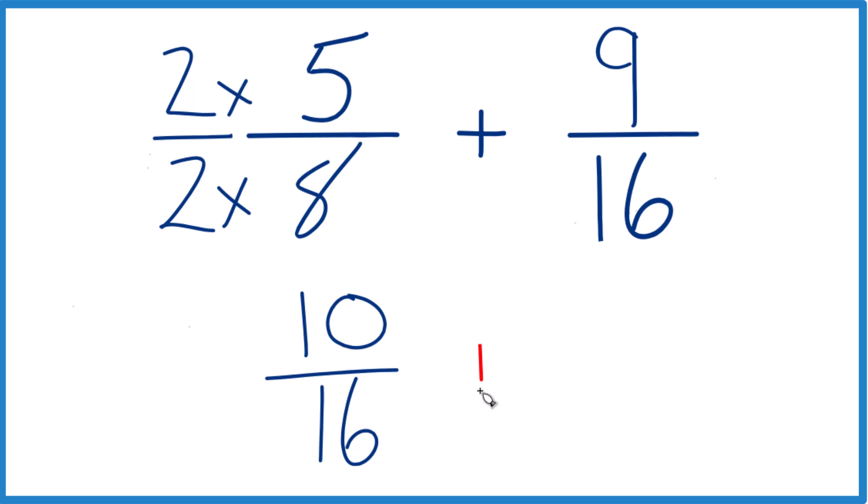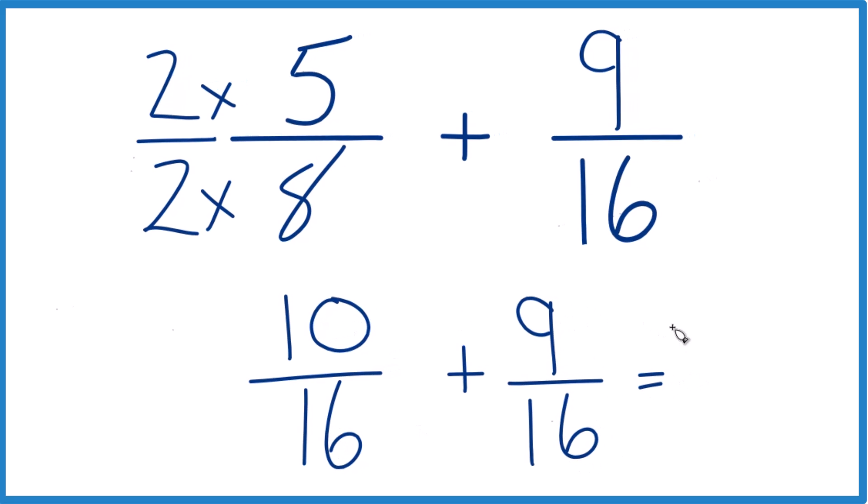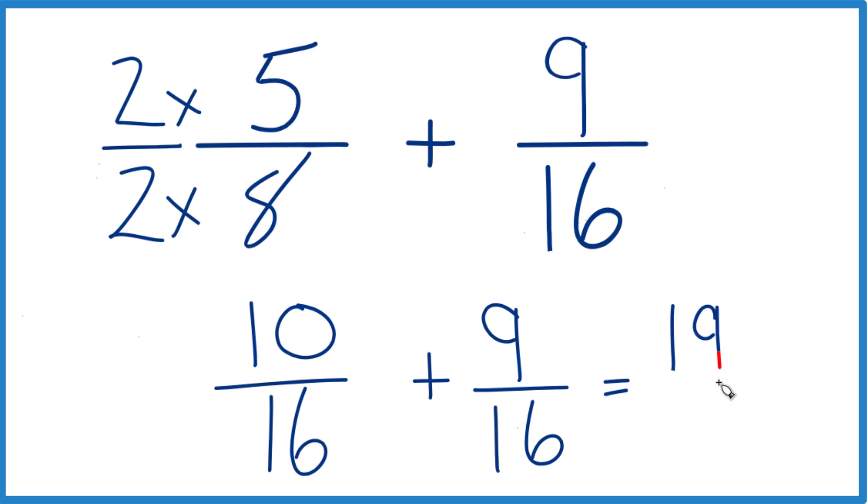But now we can add that to our 9 sixteenths here. And because we have the same denominator, we add the numerators. 10 plus 9 is 19. And then we have 16. We just bring that across, our common denominator.